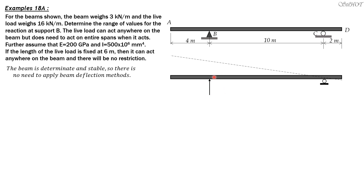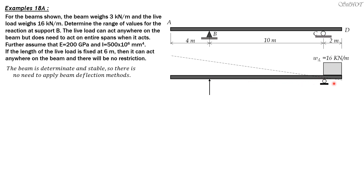To minimize the reaction at B, because this portion is negative — it is below the horizontal — you have to place the live load in that negative region. So the idea is: to compute the minimum reaction at B, place the live load at the negative portion. This will produce a negative or downward value for the reaction, counterbalancing and reducing the reaction at B.